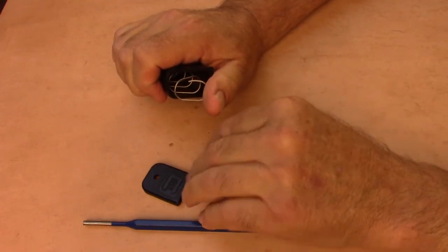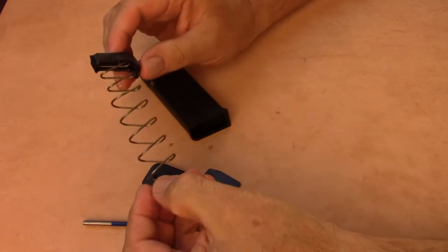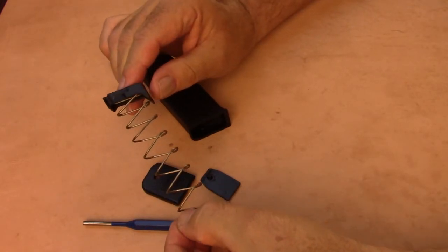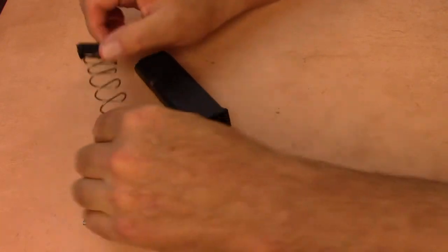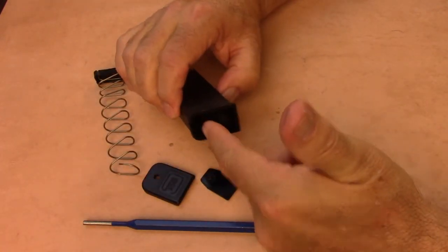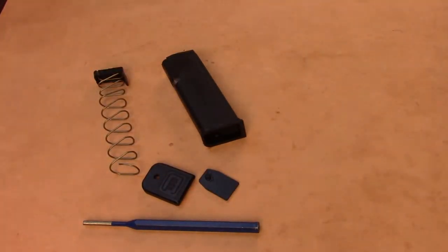Now we'll remove the insert, the spring, and the follower. Now you can clean the well of your magazine and the other parts that you've removed.